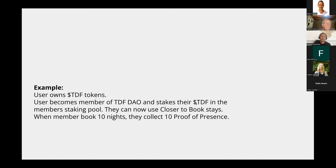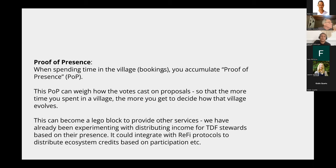For example, a user who owns TDF tokens becomes a member of the TDF DAO. That enables them to stake their TDF tokens in our member staking pool, which enables them to book a stay on the Closer platform. Then we attribute a proof of presence for every night spent on the project — that becomes your on-chain booking mechanism. This proof of presence is a Lego block that we intend to develop other functionality on top of. The first thing we're doing currently is building integration to Snapshot, so you can use proof of presence as a weight on votes you're casting.